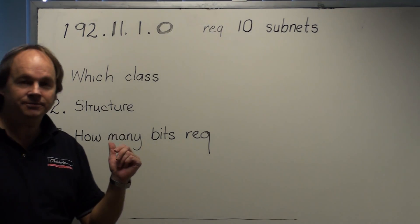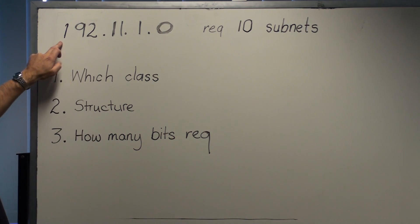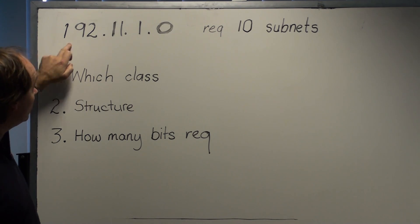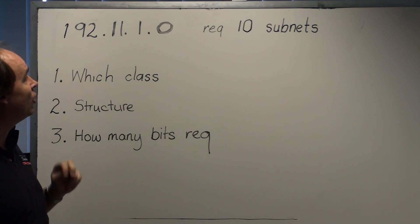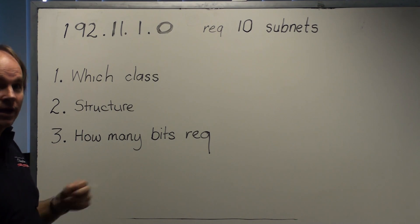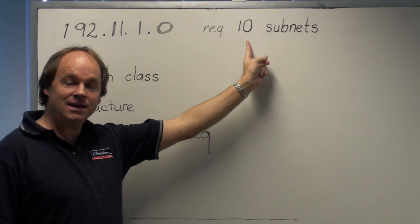What we're looking at today is subnetting. In this example I've placed a network before it's subnetted. We've got 192.1.1.0. In this scenario we require 10 subnets.